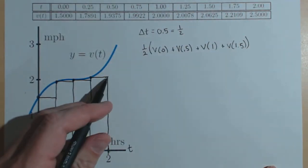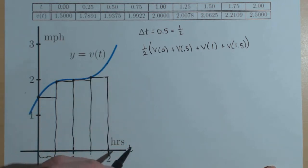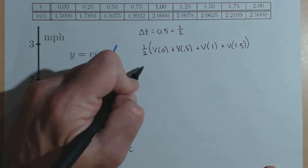plus v of 1 plus v of 1.5. Notice I don't use two because that would put me all the way up here and make another rectangle. We only have four, so there's our four heights.